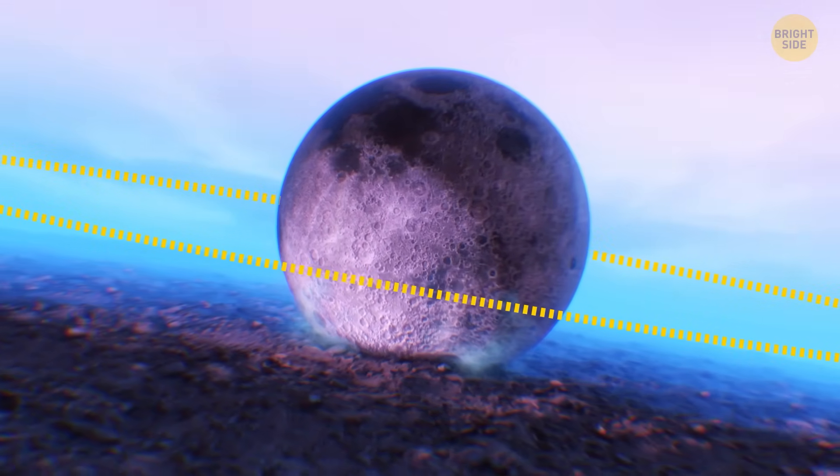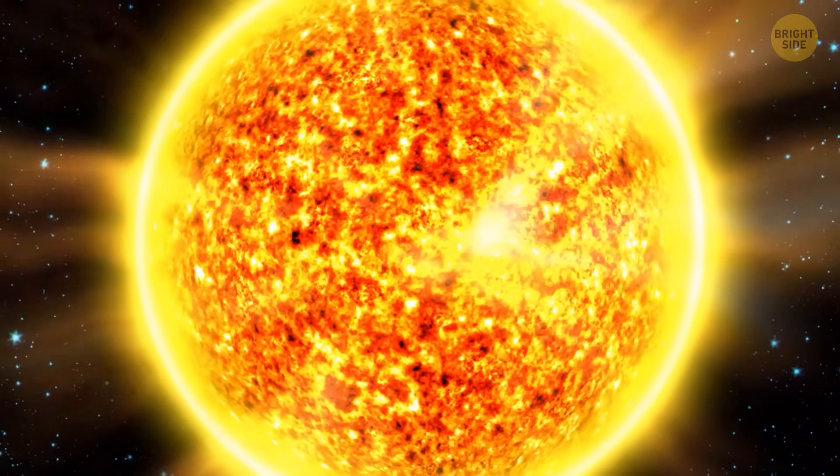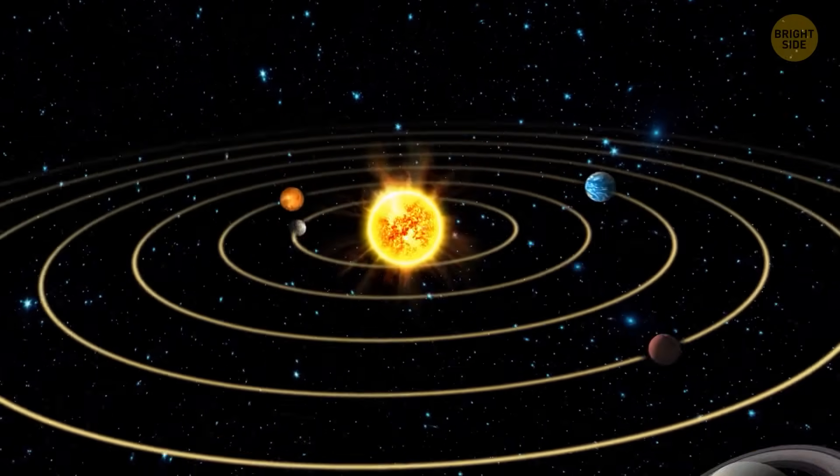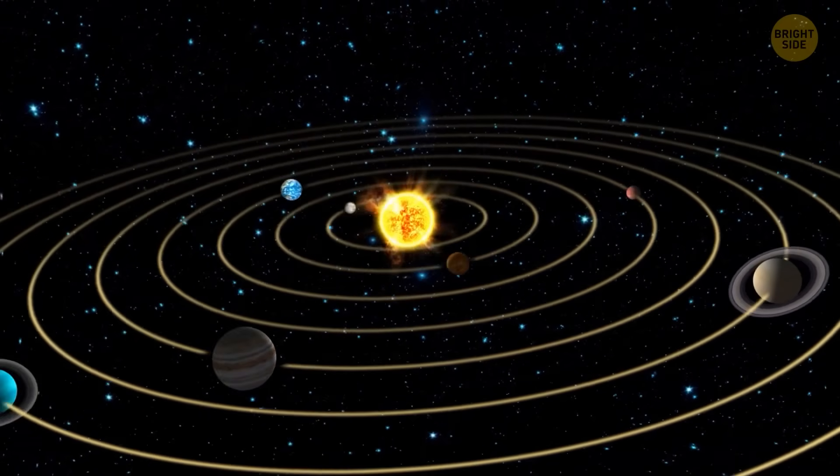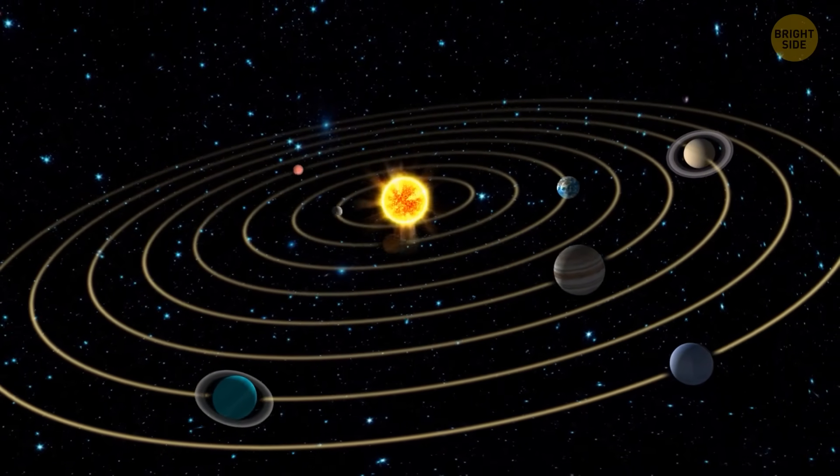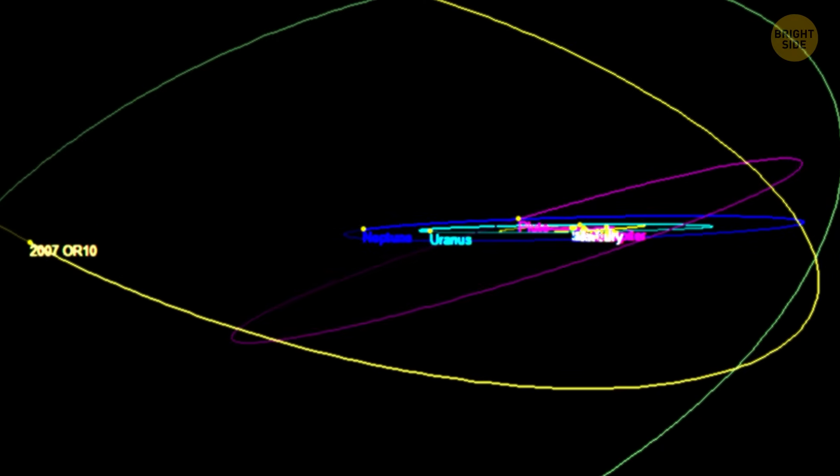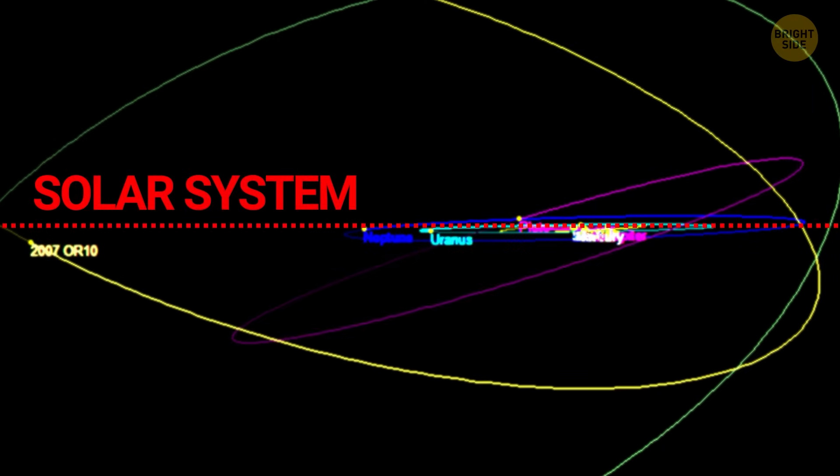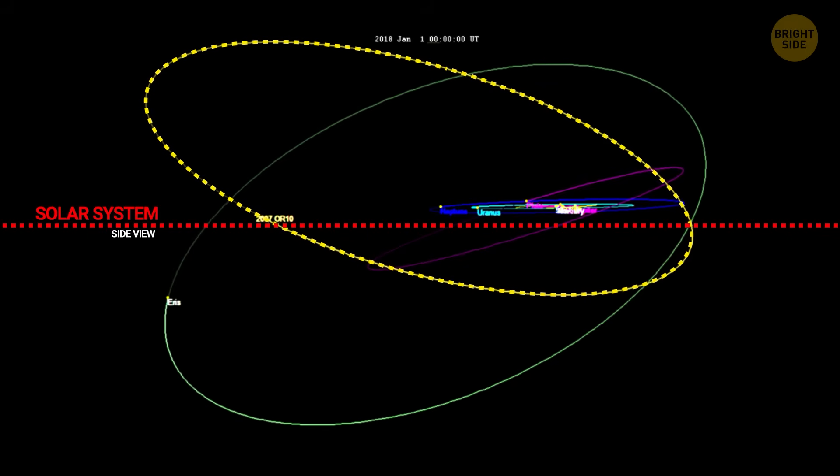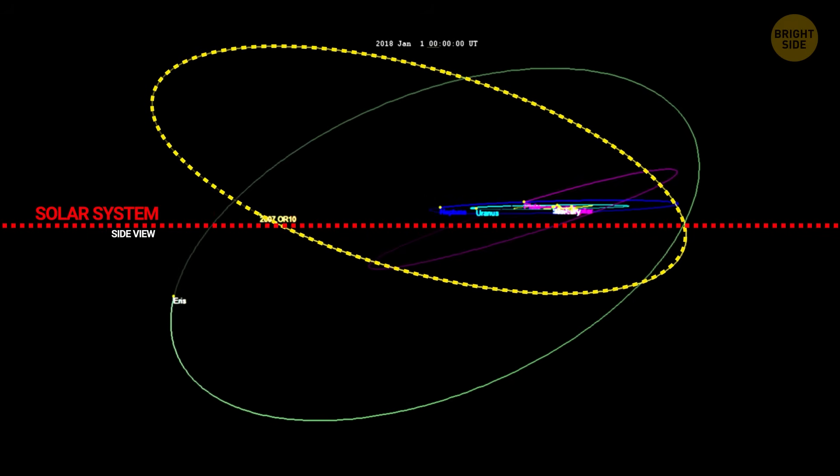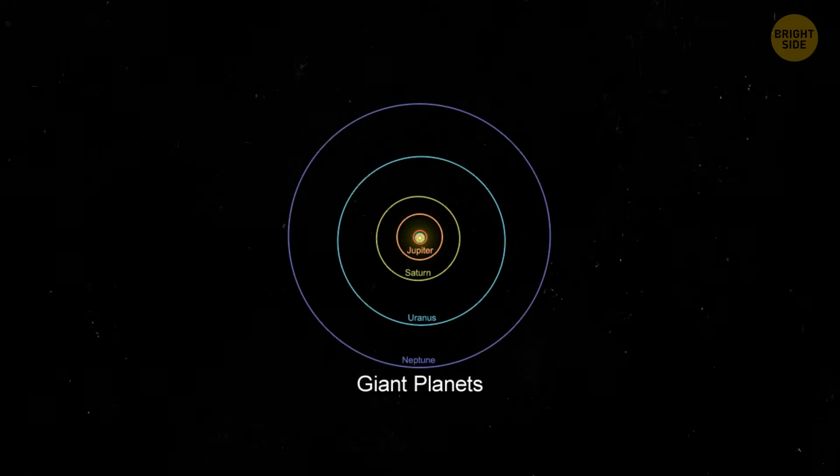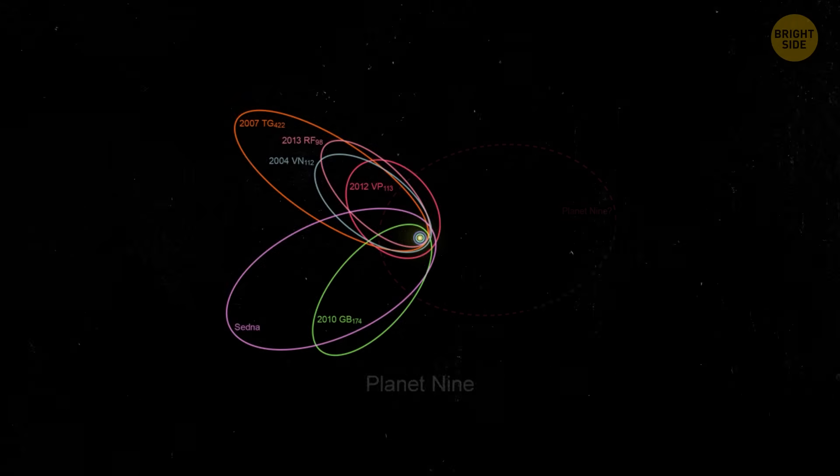It could explain why some far-out space rocks in the Kuiper Belt tilt weirdly. The thing is, most planets go around the Sun in a flat-ish circle, but those far-away objects are tilted about 20 degrees. Planet 9 might be the reason why. Next, we'd probably find out why those tilted objects seem to point the same way. Their orbits are grouped together in one direction. A big, hidden planet's gravity could be herding them like sheep. There are also some strange tilted objects super far away. They don't make sense unless something big, like Planet 9, is tugging on them.